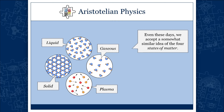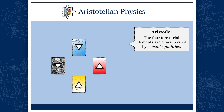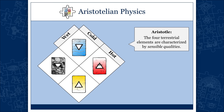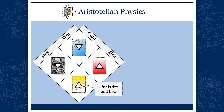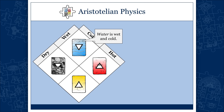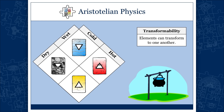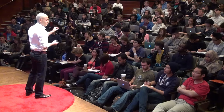One thing they believed about these four elements is that they are characterized by sensible qualities: cold and hot, and also wet and dry. Fire is dry and hot; earth is dry and cold; water is wet and cold; air is wet and hot. If you accept this principle, it opens a number of possibilities. The first is the idea of transformability — that elements can actually transform into one another. You just change their sensible qualities: if you take something cold and turn it hot, you change the element.